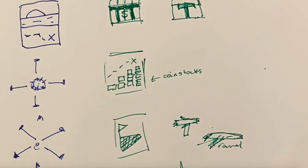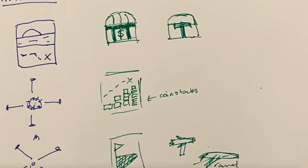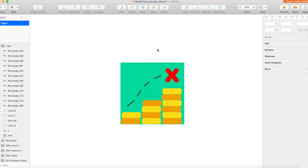The coin stack idea would also have a treasure map look to it above it. I did actually move forward with that one, but I also moved forward with another one which I ultimately ended up going with — essentially a treasure chest-looking icon with two T's in it for 'Travel Treasury', where the T's would be part of the treasure chest design.